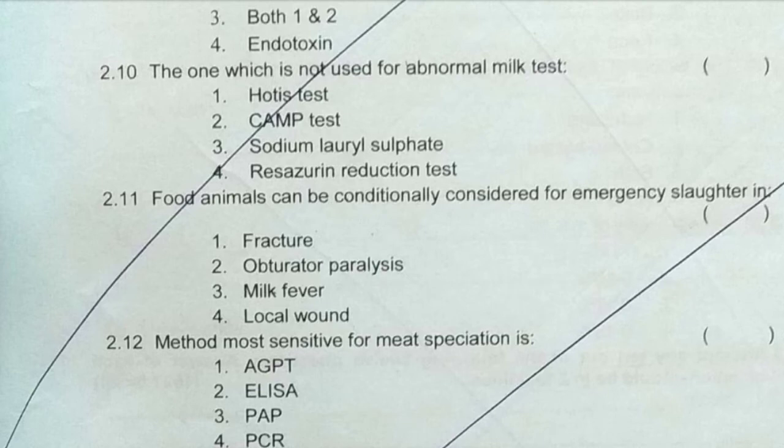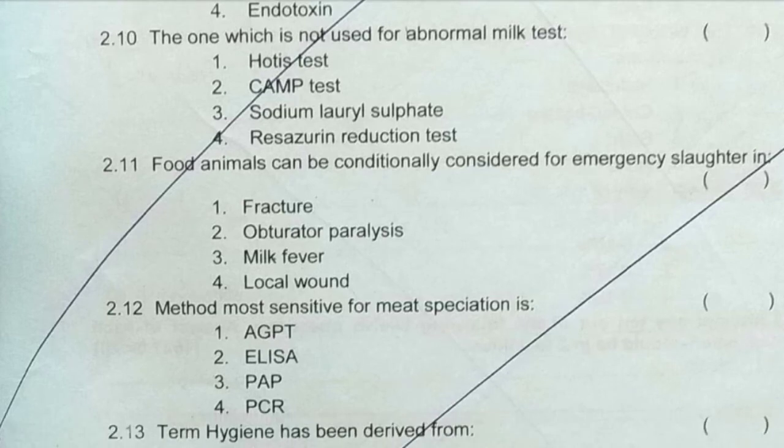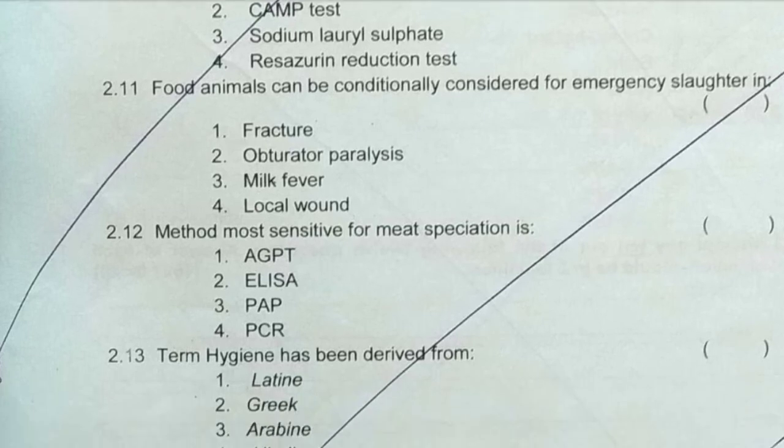Next question: food animals can be conditionally considered for emergency slaughter in — the answer is the first option, fracture, because an animal with a fracture is in severe pain and emergency slaughter becomes necessary.